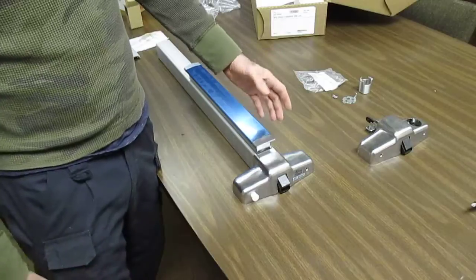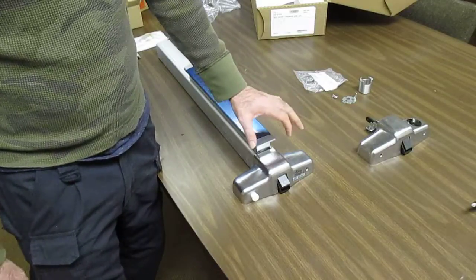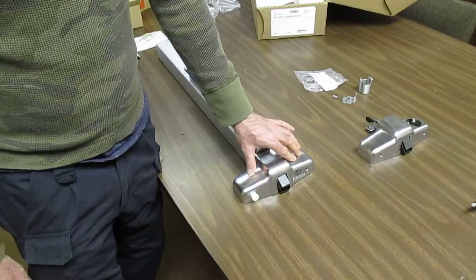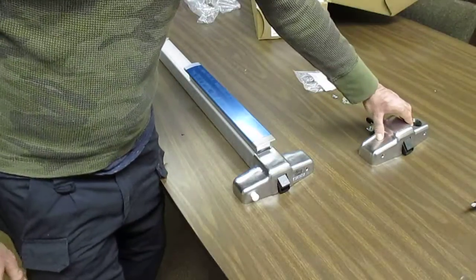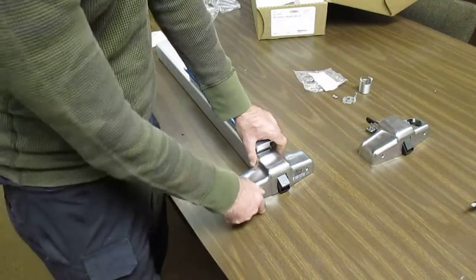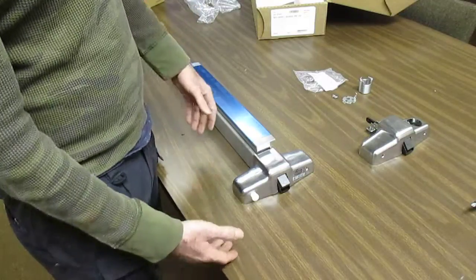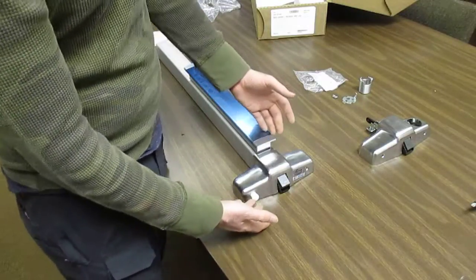Today we're going to be showing how to basically retrofit the active case assembly with a double cylinder. First things first, Phil, you're going to want to get the device off the door and put it somewhere flat so it's easy to work with.